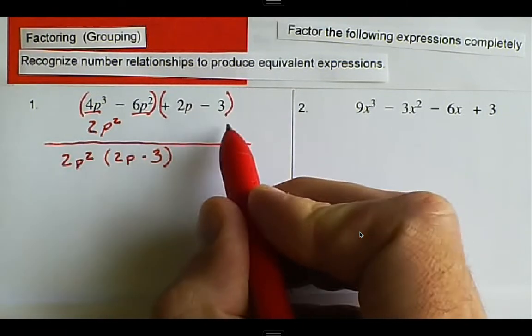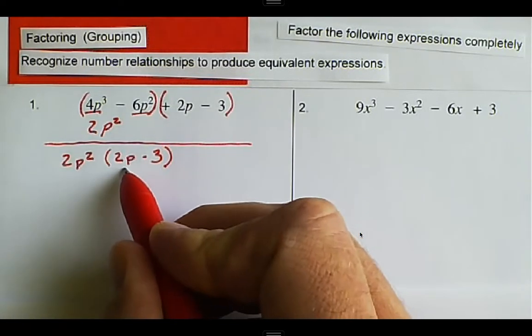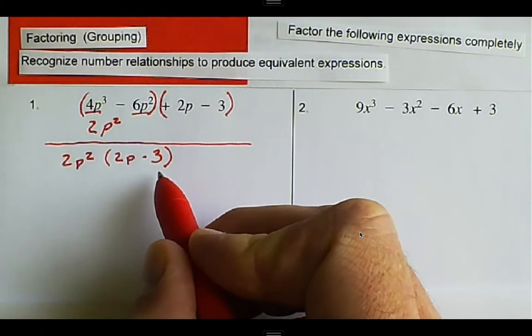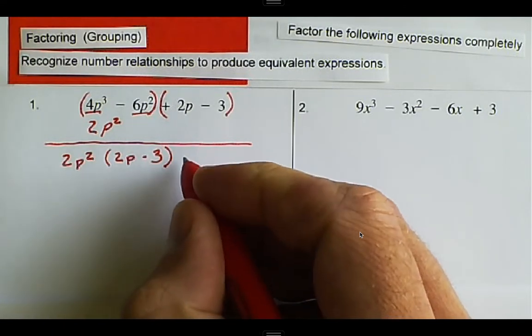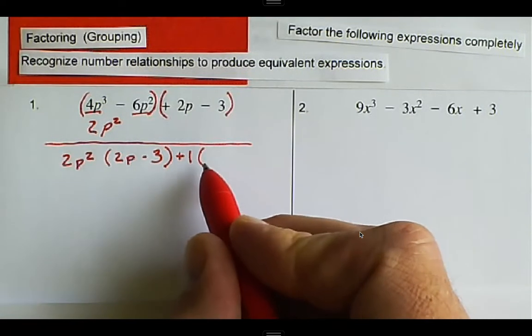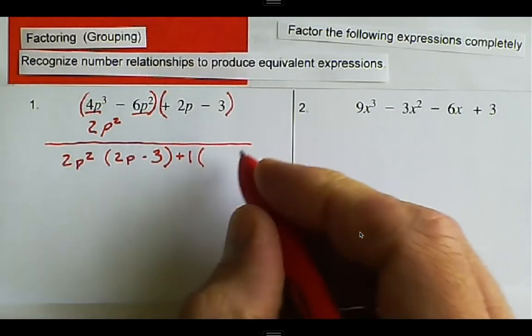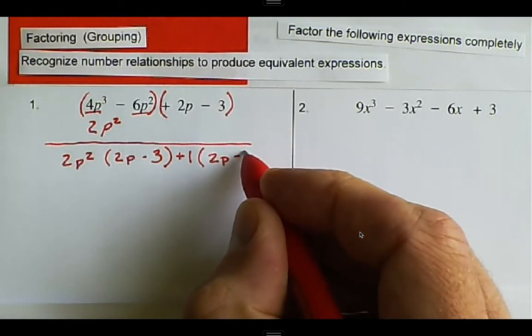Now, is there anything to factor out of this last one? We already have 2P minus 3 and 2P minus 3, so there's nothing really to factor out. So we can always factor out a positive 1. 2P divided by 1 is still 2P. Negative 3 divided by 1 is still negative 3.